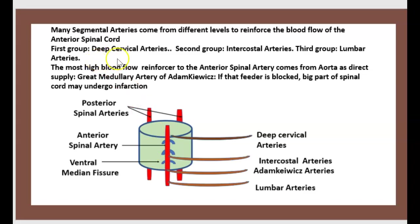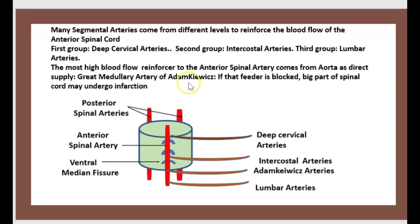There are three groups: the first is the deep cervical artery, the second is the anterior intercostal artery, and the third is the lumbar artery. The most important blood flow reinforcer to the anterior spinal artery comes from the aorta, supplying via the great medullary artery — or artery of Adamkiewicz. If this artery is blocked, a large part of the spinal cord may undergo infarction.